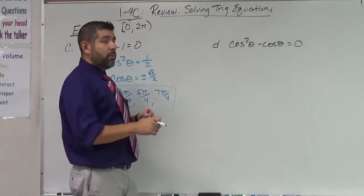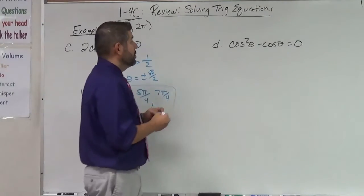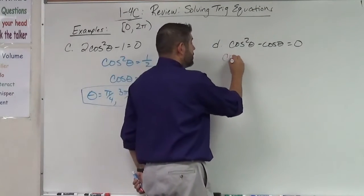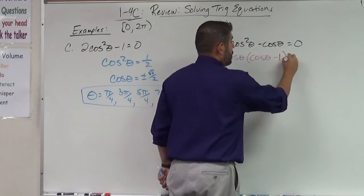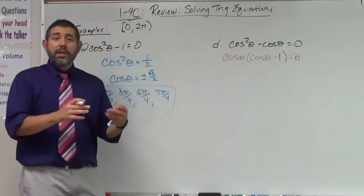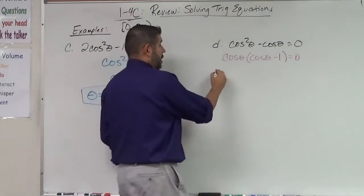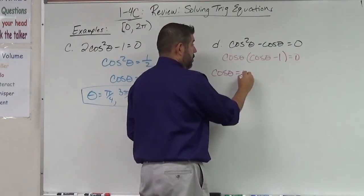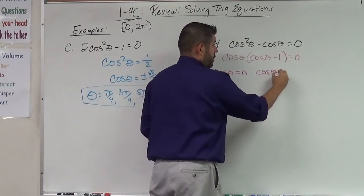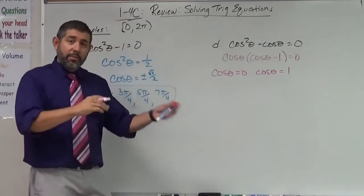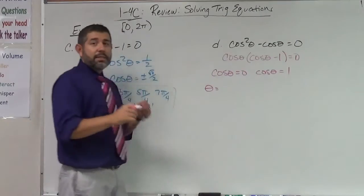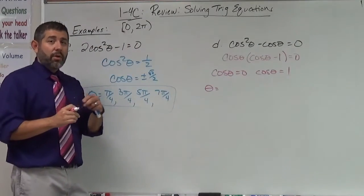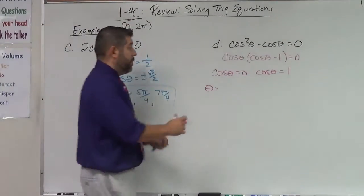Let's look at cosine squared minus cosine theta equals zero. This one I'm going to factor. So I factor the cosine out from both of those and then I set those equal to zero. And that's going to end up being equal to one because I'm going to add the one over. So where is the x coordinate zero? The x coordinate is going to be zero at pi over two and three pi over two.